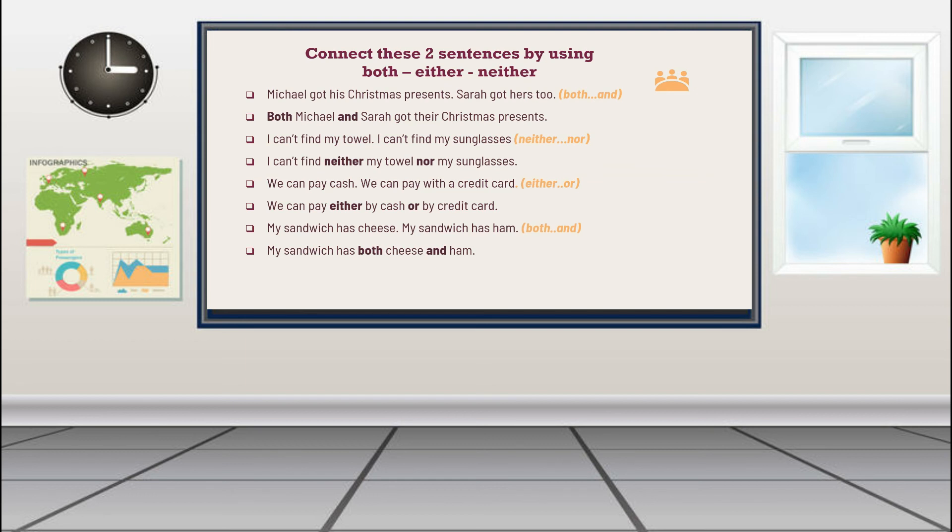Great, the answer is 'My sandwich has both cheese and ham.' Did you see the pattern? You put them before the nouns or even the adjectives. And then the baby isn't loud and he isn't annoying too. Because this is a negative statement, we use neither and nor like this: 'The baby is neither loud nor annoying.'